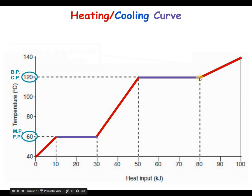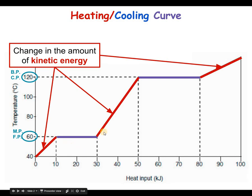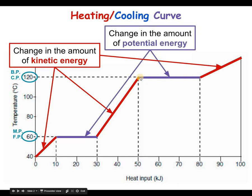To recap: on the sloped sections of the graph, we observe changes in kinetic energy as energy is put into or leaves the substance, which corresponds to increases or decreases in temperature. On the two plateaus, however, there is no change in kinetic energy — instead, the change in potential energy inside the substance takes place during those periods.